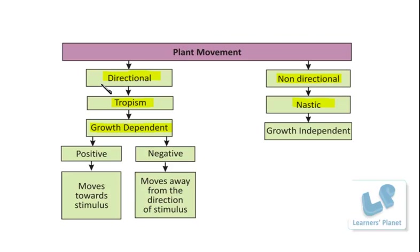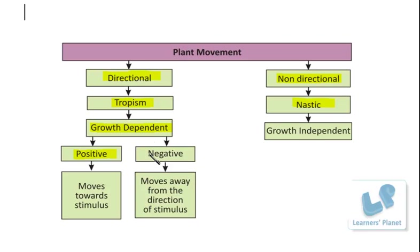Now, these movements are directional and growth dependent — meaning the growth of the plant or part of the plant is taking place in a particular direction, either towards the stimulus or away from the stimulus. If the growth occurs towards the direction of the stimulus then it is known as positive tropic movement, or positive tropism. And if it is away from the stimulus, it is the negative tropic movement, or negative tropism.